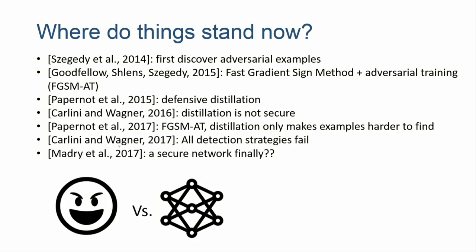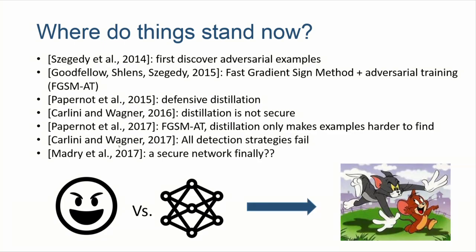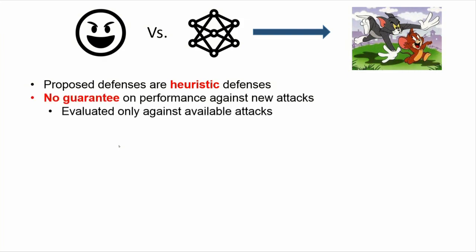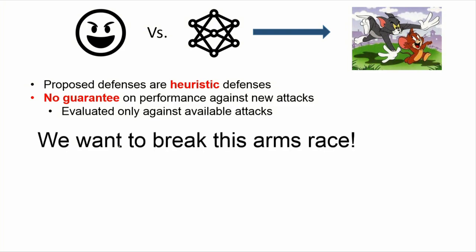This game between attacks and defenses looks like each side keeps coming up with new attacks and defenses that beat each other. Why are things in this cat-and-mouse game? All the proposed defenses are heuristic, which is bad when interacting with adversaries, because they have the incentive to find cases where heuristics fail. Also, when you propose a defense, it's typically evaluated only on existing attacks, with no guarantee against future attacks — and future attacks indeed break all these defenses quite often.